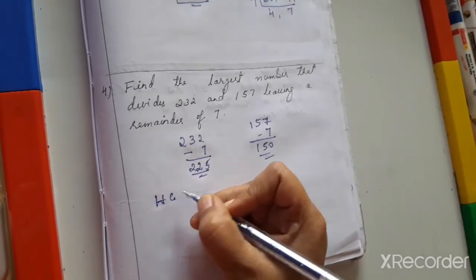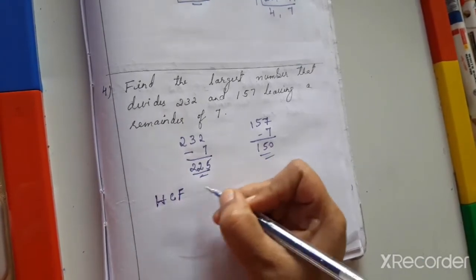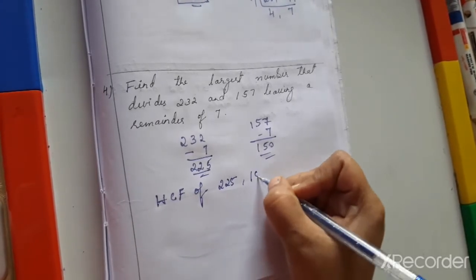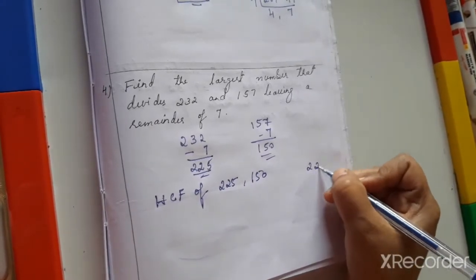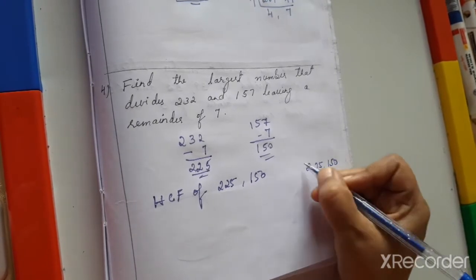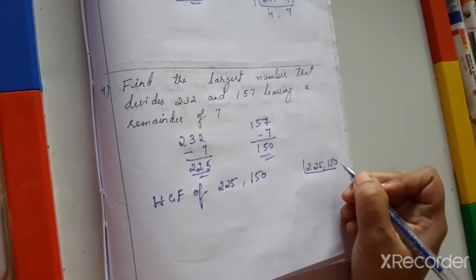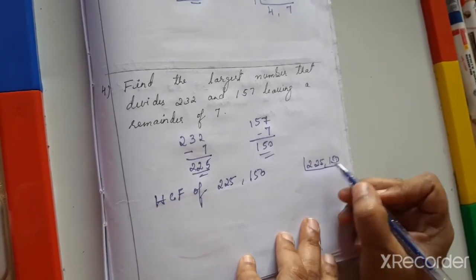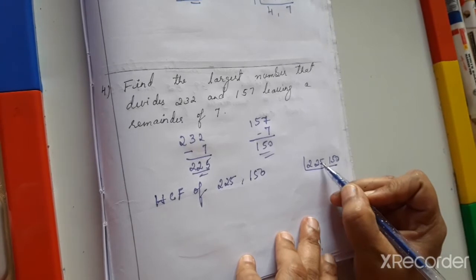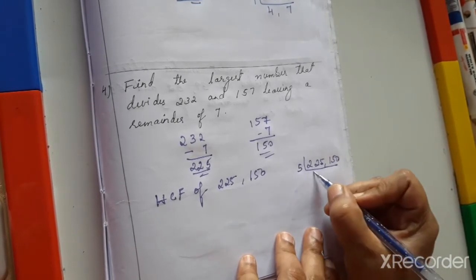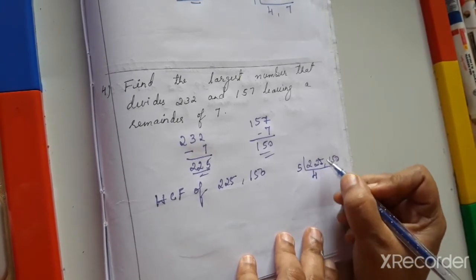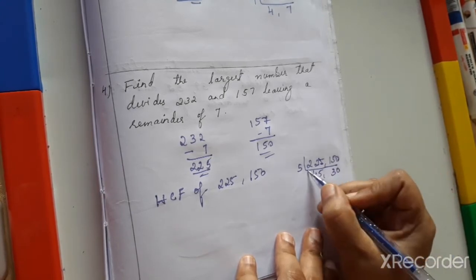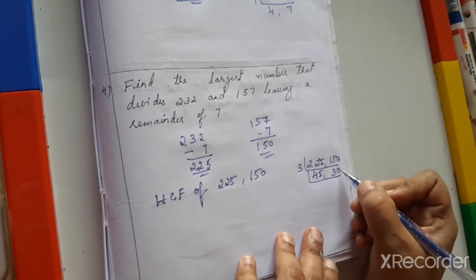Find HCF of 225 and 150. Both end in 5 or 0, so divide by 5: 225 ÷ 5 = 45, 150 ÷ 5 = 30. Again divide by 5: 45 ÷ 5 = 9, 30 ÷ 5 = 6. Now divide by 3: 9 ÷ 3 = 3, 6 ÷ 3 = 2. Since 3 and 2 share no common factor, stop here.